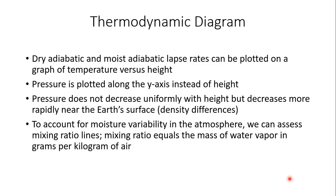So what exactly is a Skew-T Log-P diagram? It is a thermodynamic diagram. We talked earlier in the training series about dry adiabatic and moist adiabatic rising of air parcels and those various lapse rates. Unsaturated air parcels rise at the dry adiabatic lapse rate of 10 degrees Celsius per kilometer. For the moist adiabatic rate, that's a lower rate — generally 6 degrees Celsius per kilometer. These dry and moist adiabatic lapse rates can be plotted on this Skew-T diagram, which shows temperature versus height.